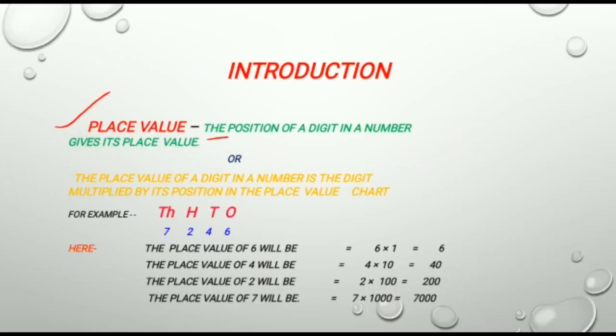The position of a digit in a number gives its place value. Or in other words, the place value of a digit in a number is the digit multiplied by its position in the place value chart.